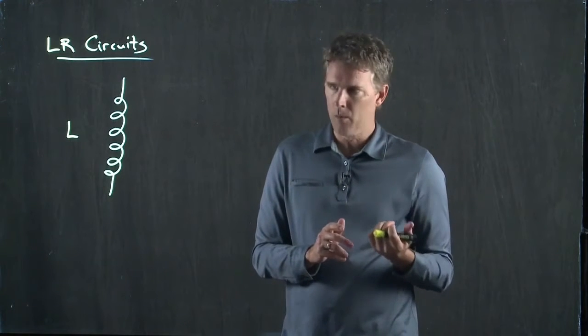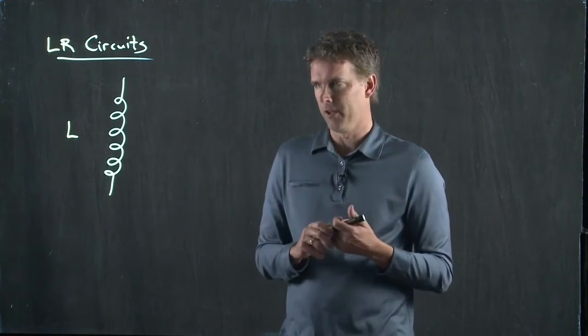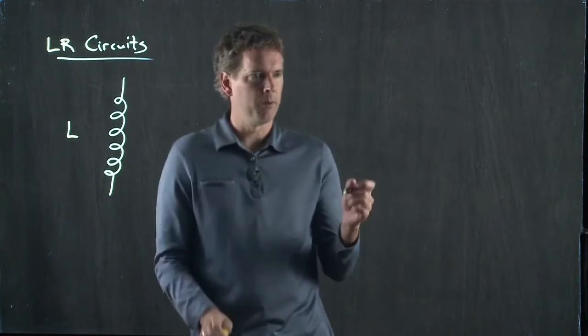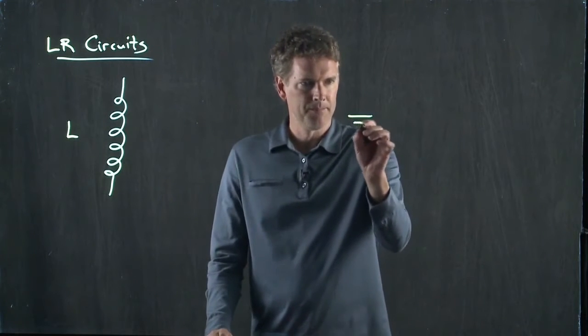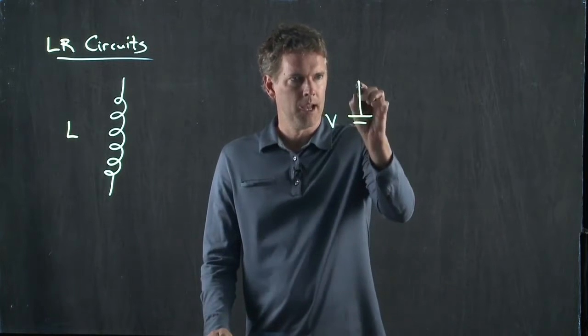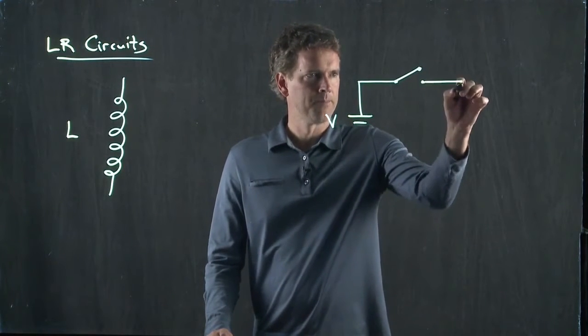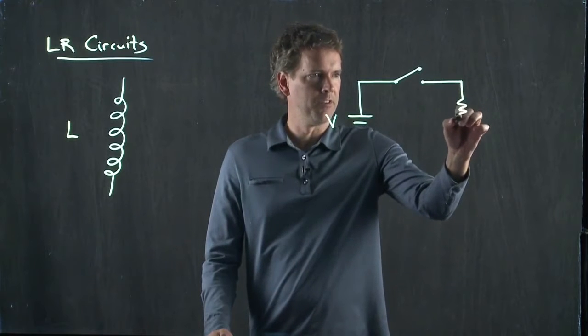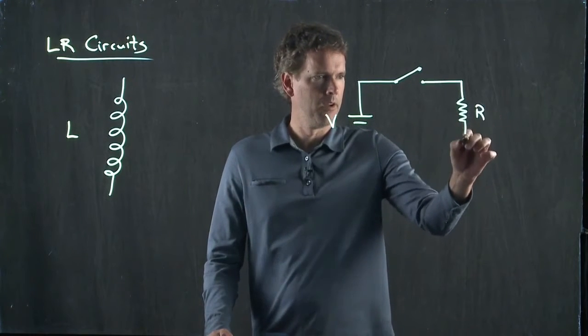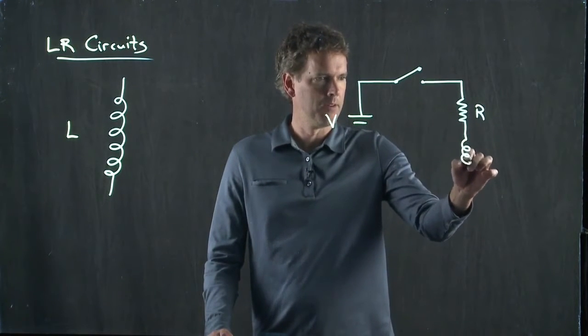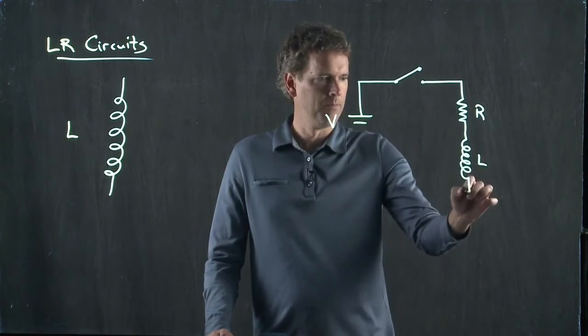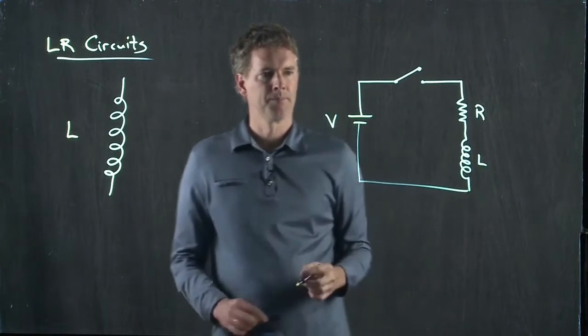Okay, let's talk about what this looks like in a circuit. So let's say we do the following. Let's take a battery, voltage V, and let's hook up a switch to the battery. And now we will put a resistor R and an inductor L.